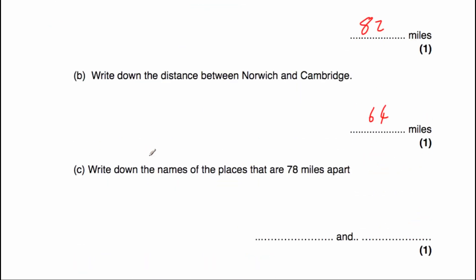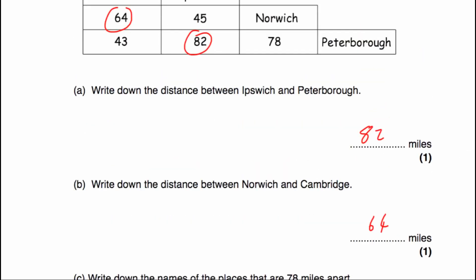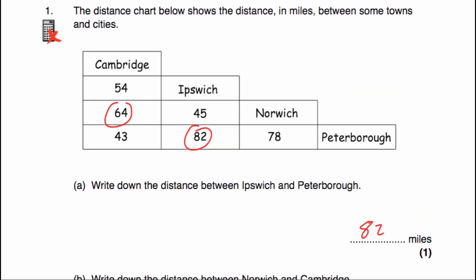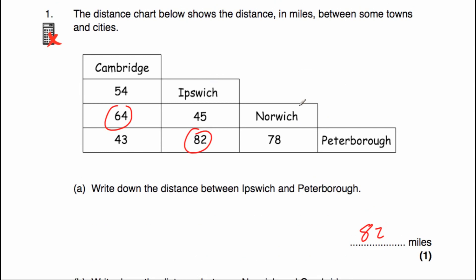Question C says write down the names of the places that are 78 miles apart. If we go up to the distance chart and look for the 78 — here we've got 78 — and that's going to be Norwich and Peterborough.